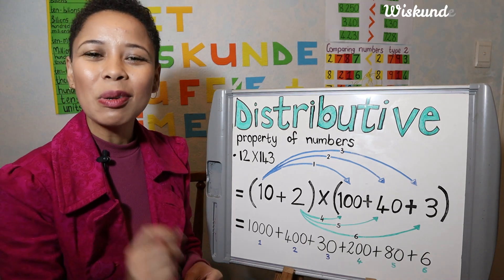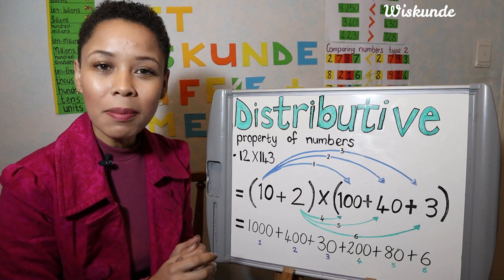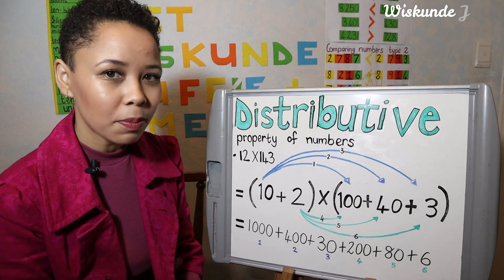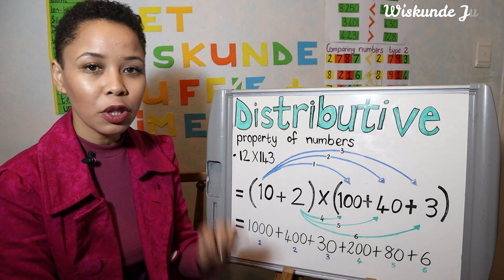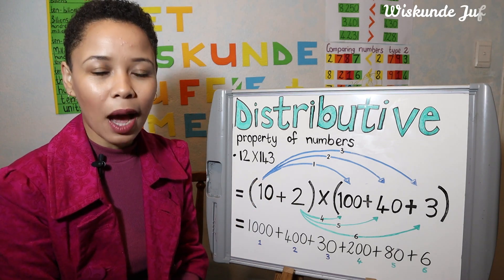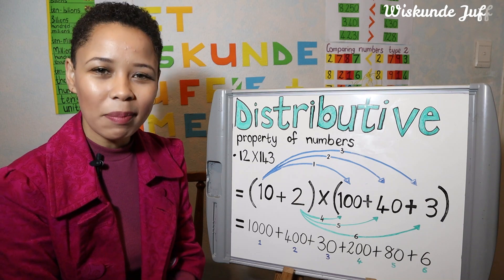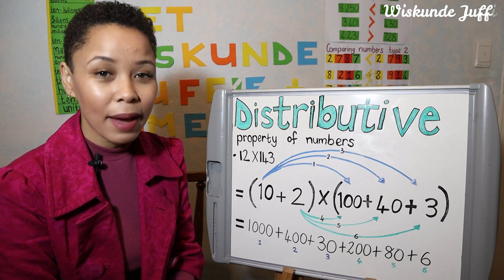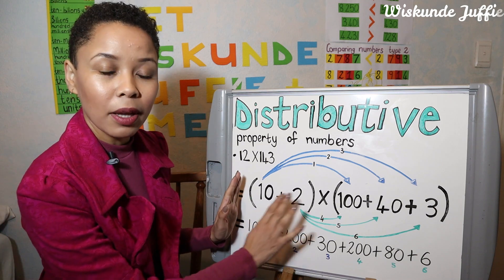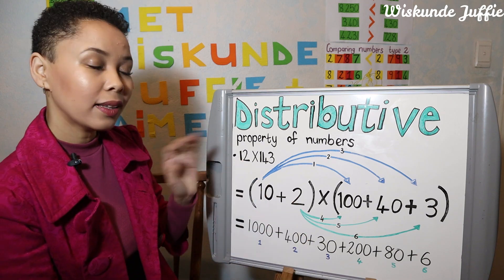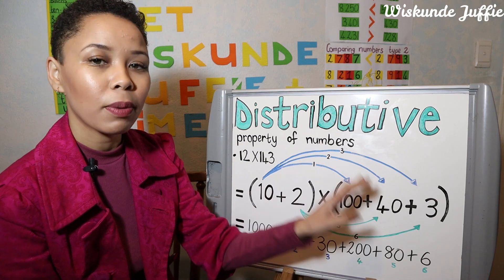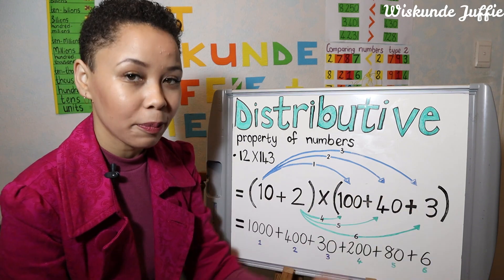So let's look at an example where I'm using numbers. The sum is 12 multiplied by 143. The first thing I will do is expand each number and write it in expanded notation. So 12 becomes 10 plus 2, and 143 becomes 100 plus 40 plus 3.